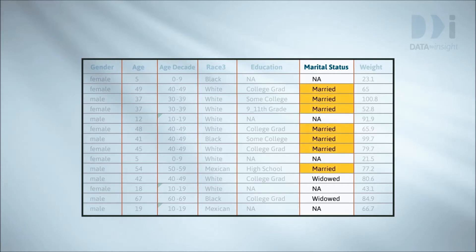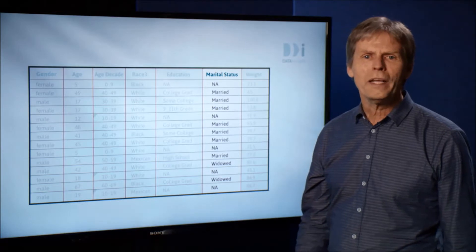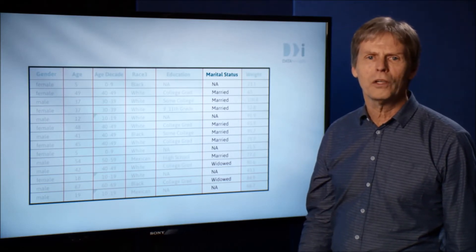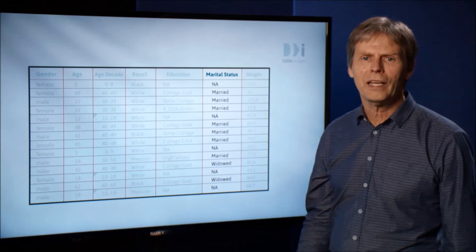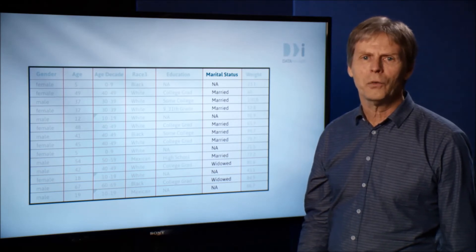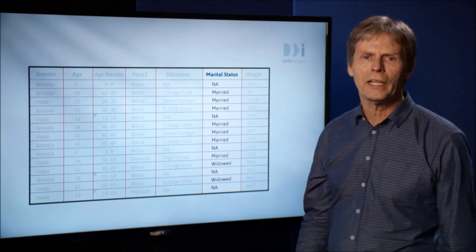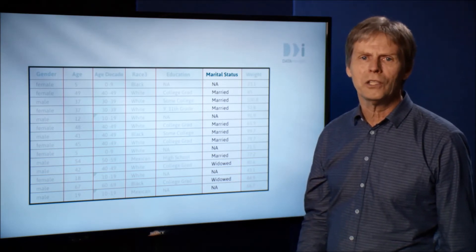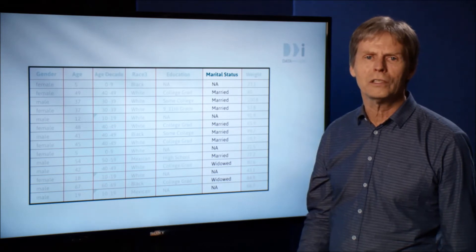I see married and widowed. Recall that NA is a code for missing. All we can do with group membership on its own is to count how many people fall into each group and compare these counts. This lets us answer questions like, what are the most common categories of marital status? Generally, we convert our counts into percentages so that we can compare groups of different sizes.